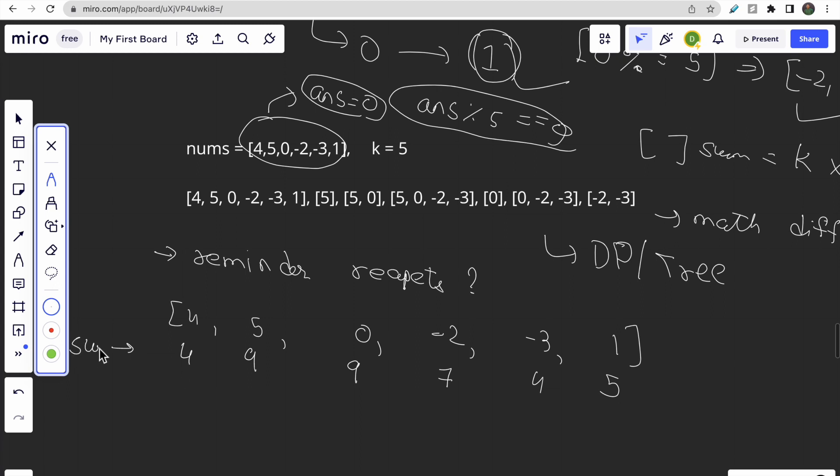And we will find prefix sum modulus k. So here k is 5. So what we will do? 4 modulus 5 is 4. Now 9 modulus 5 is also 4. 7 modulus 5 is 2. Then this is 4. Then this is 0. So as you can see here, that here it's 4 and 4. The remainder repeats. The remainder repeats.